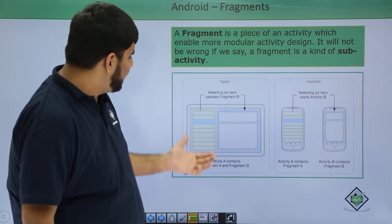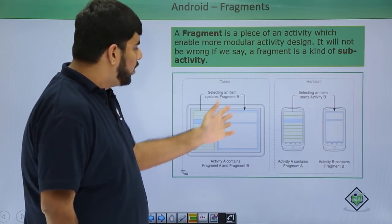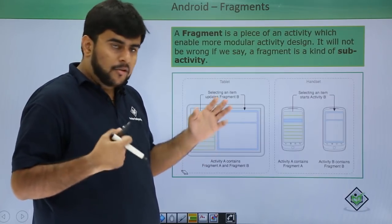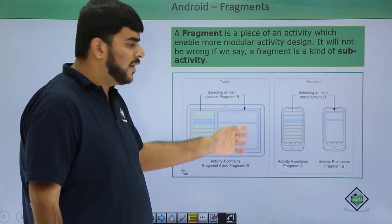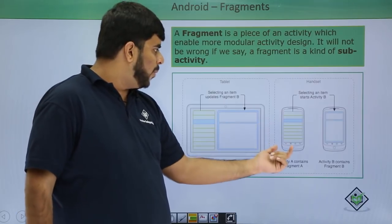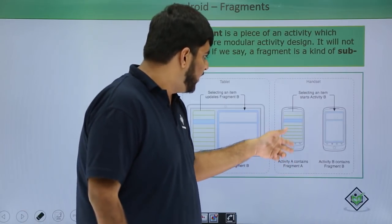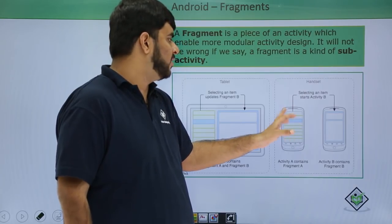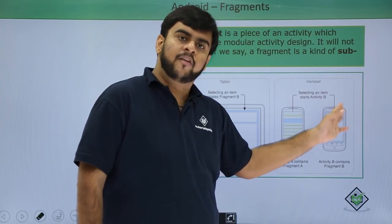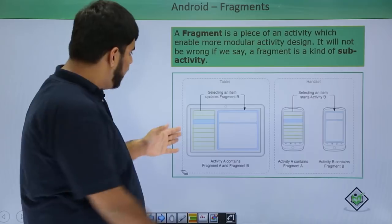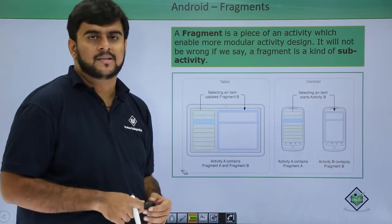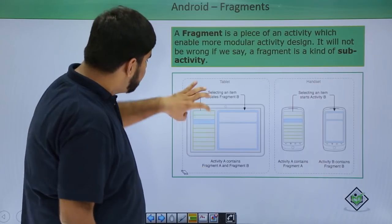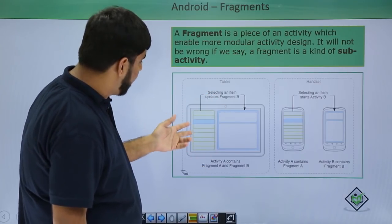So what are fragments? You would have seen tablets where you are able to have two parallel activities running together. You click on one item and the detail comes up alongside. But in the mobile phone, the view is different — say you are on the settings page, you switch and go to the wireless page. Here on the tablet, you are able to have both views placed simultaneously parallel to each other. How does it happen? It happens because this activity is having two fragments.